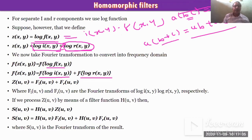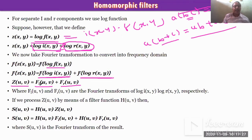F{log(i(x,y))} + F{log(r(x,y))} — this is the frequency domain of the illumination part and this is the frequency domain of the reflection part. So F_i(u,v) and F_r(u,v). The frequency domain image z is converted into illuminance part plus reflection part, where F_i denotes the illuminance part and F_r denotes the reflection part. F_i(u,v) and F_r(u,v) are the Fourier transformations of log(i(x,y)) and log(r(x,y)) respectively.